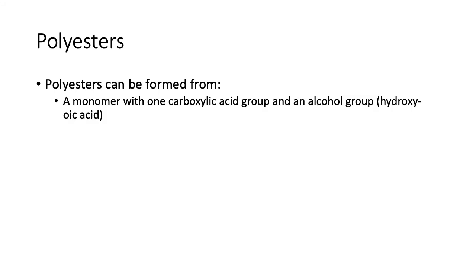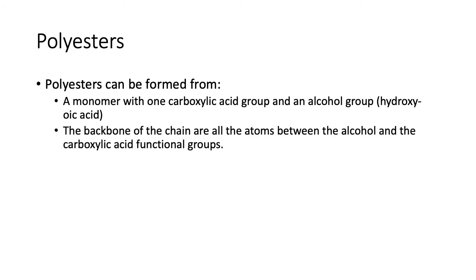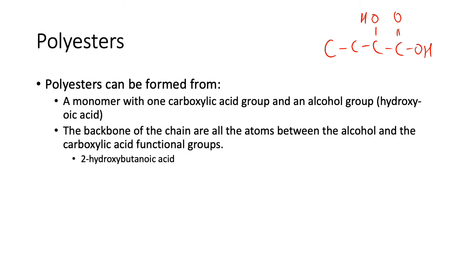You can also make a polyester from a single monomer that has both one carboxylic acid group and one alcohol group. The backbone is all the carbons between them. Let's try hydroxybutanoic acid — specifically 2-hydroxybutanoic acid. Butanoic acid with a hydroxy group at position 2. Remember we number from the carboxylic acid end. Only two carbons are part of the backbone because they sit between the carboxylic acid and the alcohol.